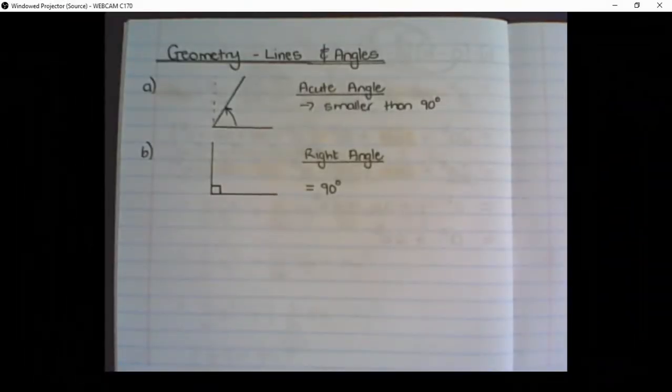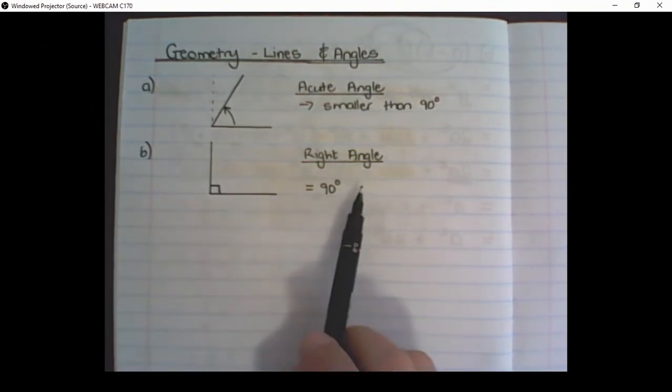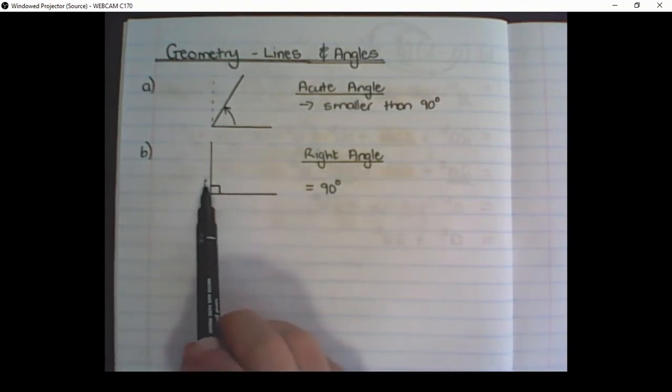The second type of angle that we have is a right angle. That is an angle that is exactly 90 degrees. And in sketches, how we show an angle that is 90 degrees is we draw a little square block, and that square block says that this angle is 90 degrees.